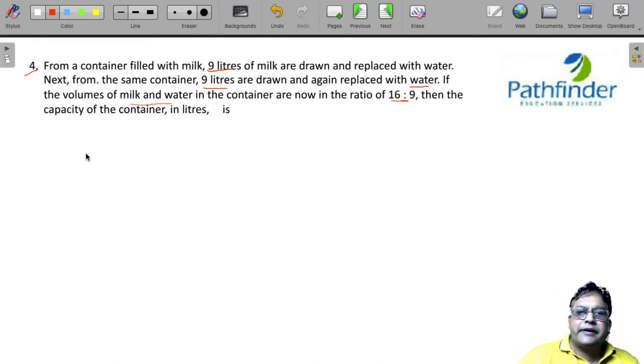Now this is a standard question. Suppose we have a container full of milk, let us say x liters of milk. If you record the volumes of milk and water at the end of each such replacement, initially the volume of milk is x, the volume of water is 0.